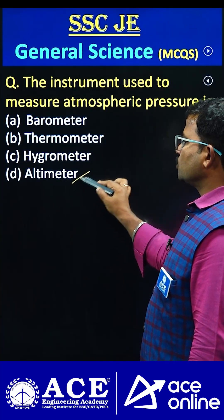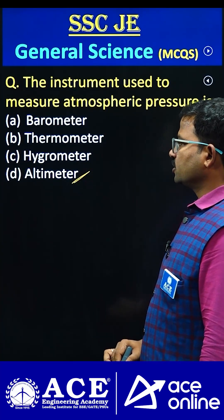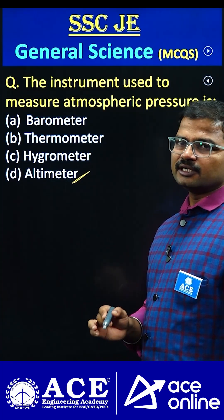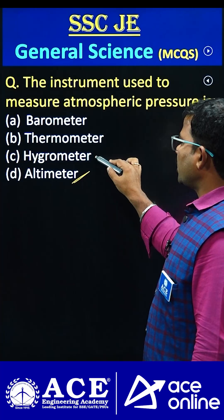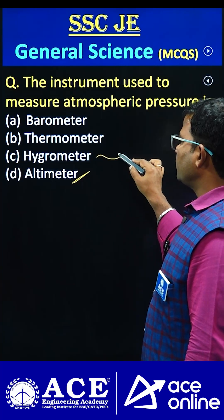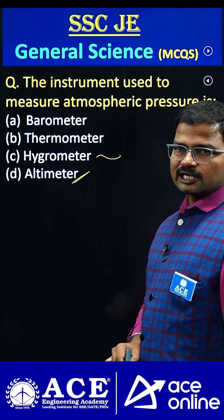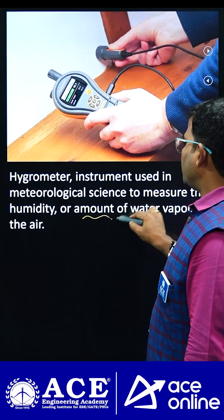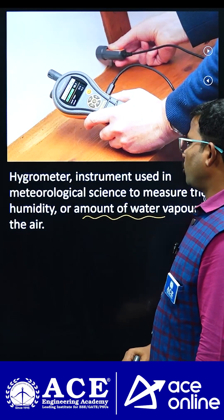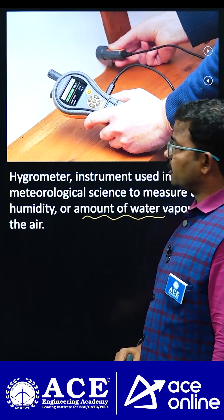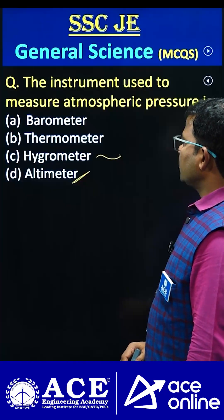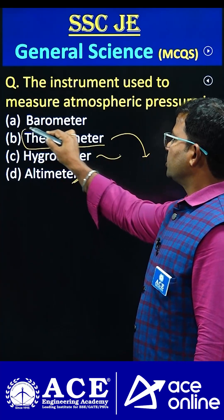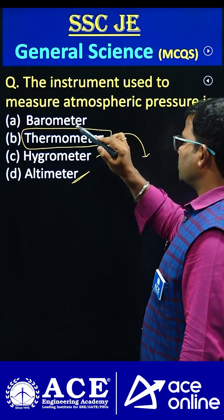Generally, altimeter is used to measure the altitude of different objects which exist in the atmosphere. Next, hygrometer — it can be majorly utilized by the meteorological department to study humidity, or the amount of water vapor especially in the air. Next, thermometer — this can be used to measure the temperature variations.